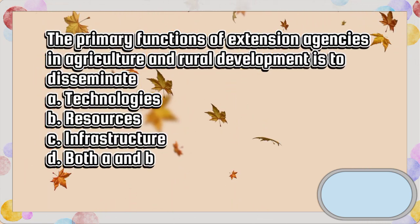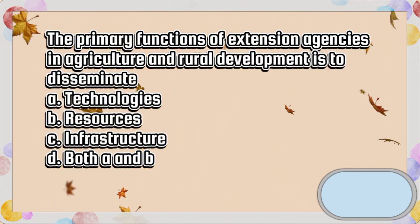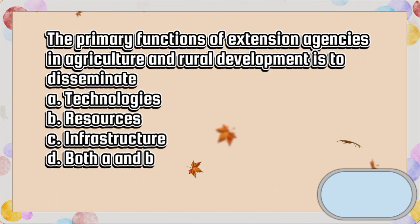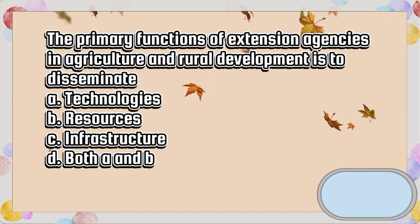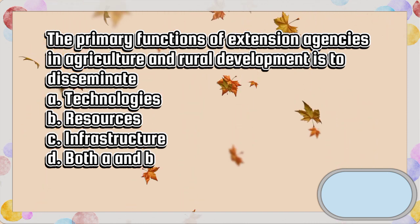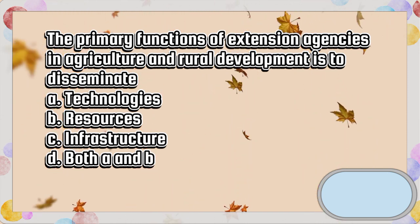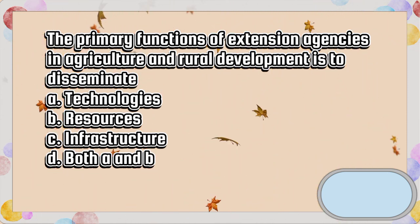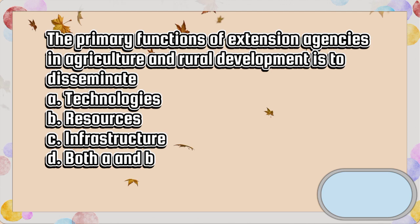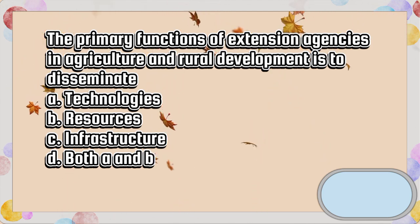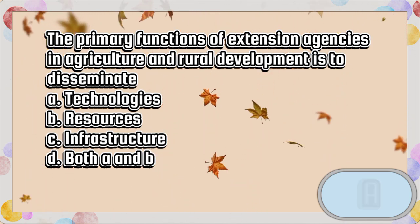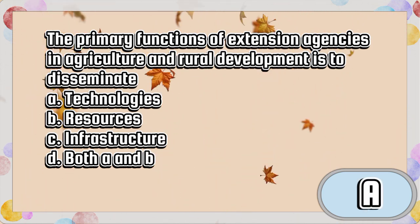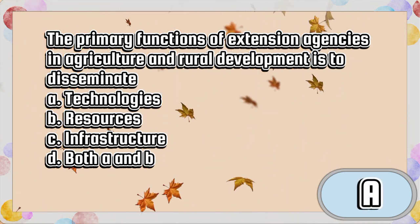The primary functions of extension agencies in agriculture and rural development is to disseminate. A. Technologies. B. Resources. C. Infrastructure. D. Both A and B. The answer is letter A.